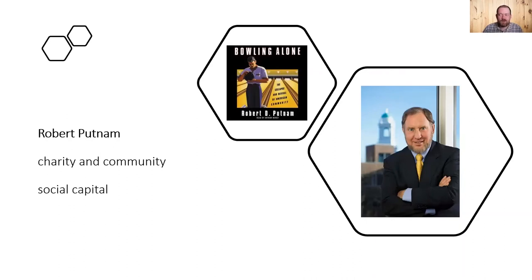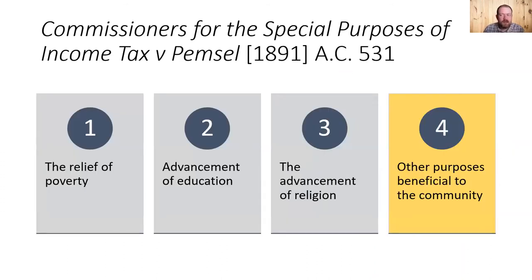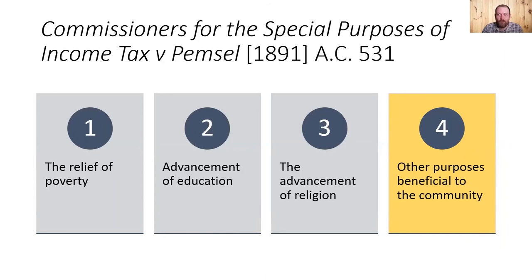So can we say this is what charity is now — community? Can we stop thinking about the old cases? Interestingly, we can actually identify the community aspect of charity in the old cases too. In Pemsel from 1891, a famous charity case, four heads are set out: relief of poverty, advancement of education, advancement of religion, and other purposes beneficial to the community. That fourth theme, once less important, may now be what charity is primarily about.